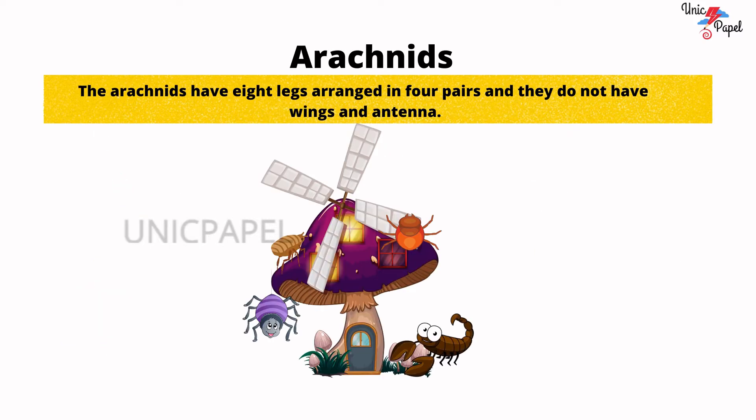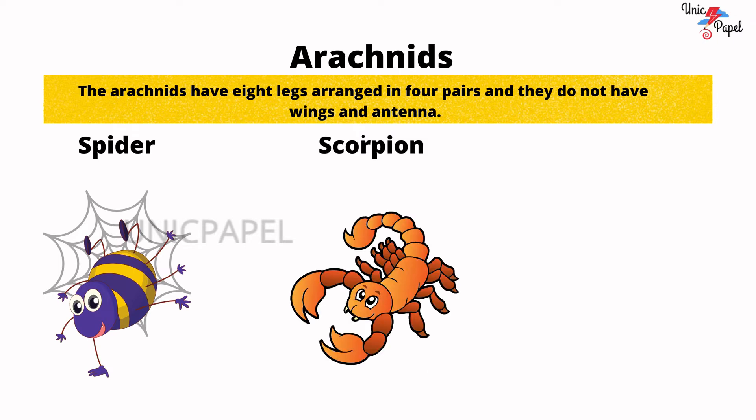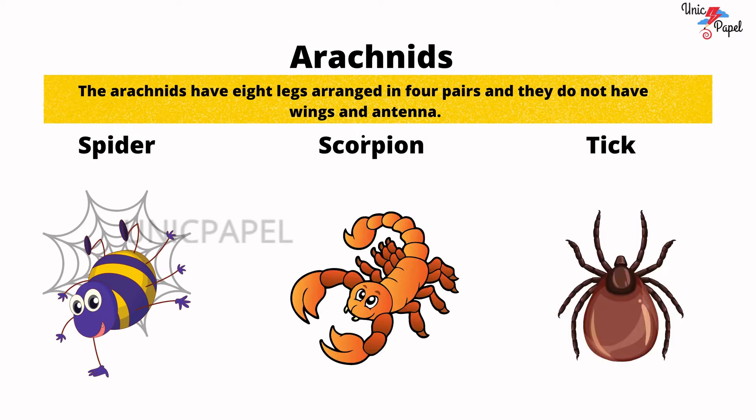Arachnids. The arachnids have 8 legs, arranged in 4 pairs, and they do not have wings and antennae. Example: spider, scorpion, tick, and many more.